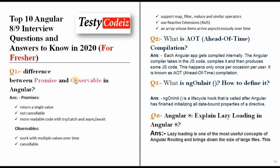The third question is: what is ngOnInit and how do you define it? To define it, you write a simple method — ngOnInit with parentheses. ngOnInit is a lifecycle hook that is called after Angular has finished initializing all data-bound properties of a directive.